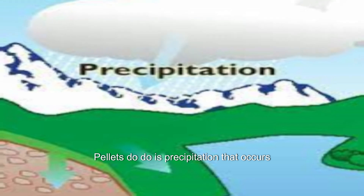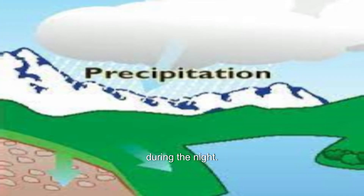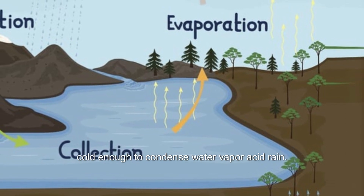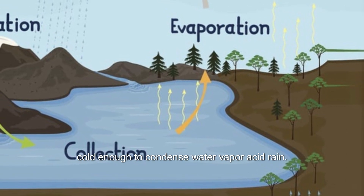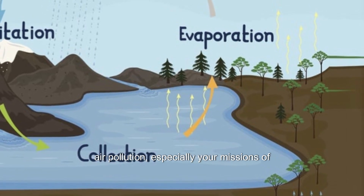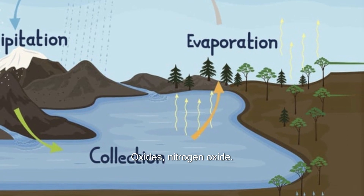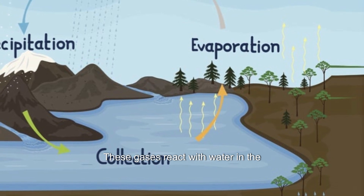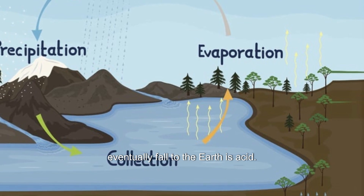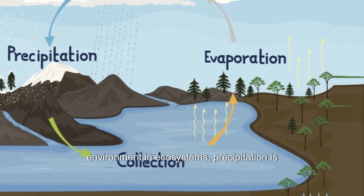Dew is precipitation that occurs when water vapor in the air condenses directly onto solid objects or plants during the night. This happens when the temperature drops at night and objects on the surface become cold enough to condense water vapor. Acid rain is a type of precipitation produced by air pollution, especially emissions of toxic gases such as sulfur dioxide and nitrogen oxides. These gases react with water in the atmosphere, forming sulfuric acid and nitric acid that eventually fall to the Earth as acid rain. Acid rain can have negative impacts on the environment and ecosystems.